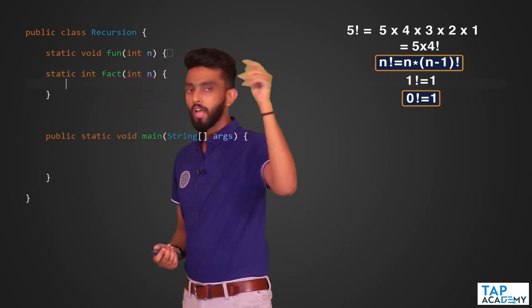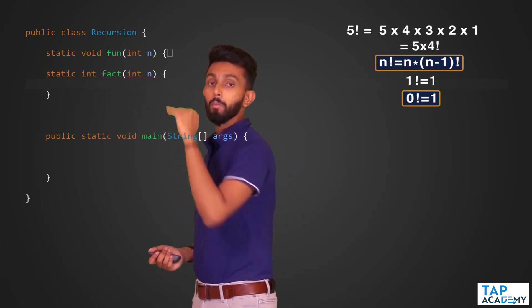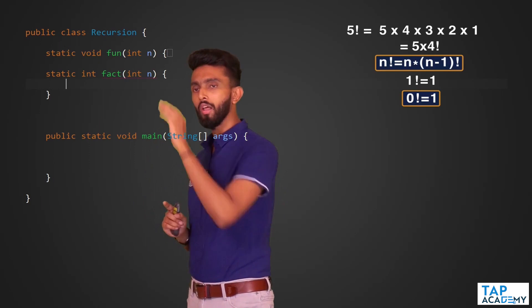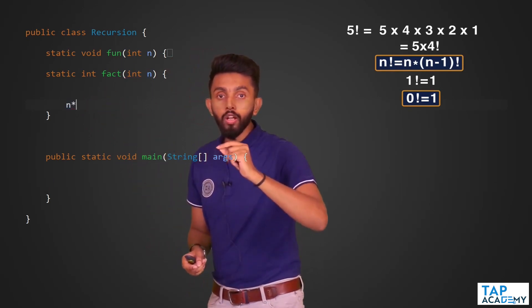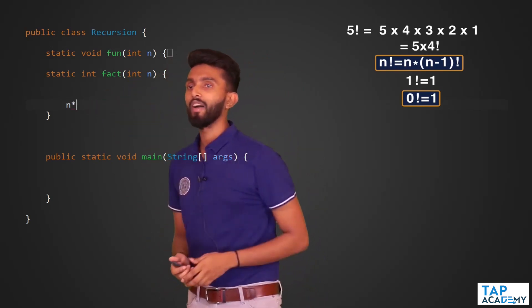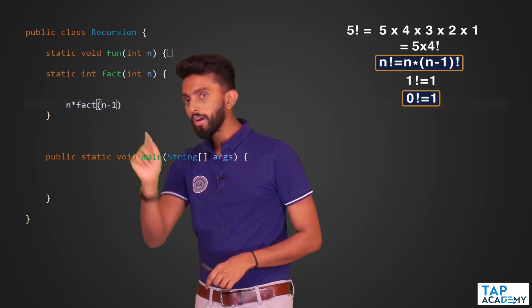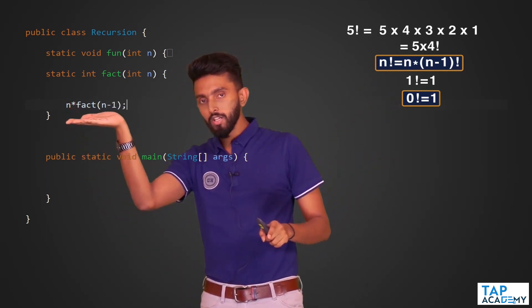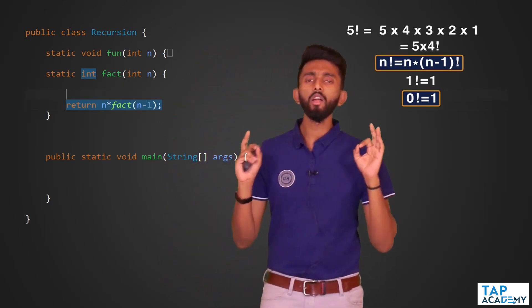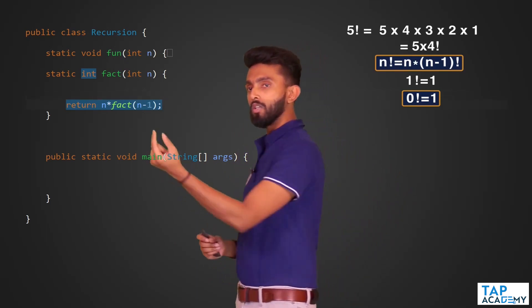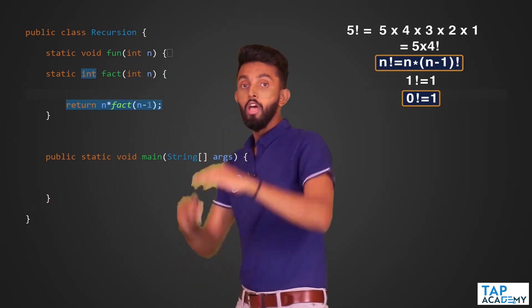One way is the iterative solution using a loop, but I want to use recursion. In recursion, to find n factorial all I have to do is return n into factorial(n−1). But if you do this without a base condition, 100% overflow will happen — it will keep calling n−1 indefinitely. Recursion must stop when it hits the base condition.